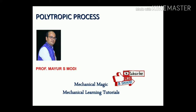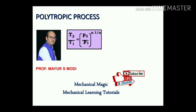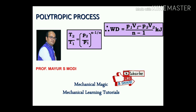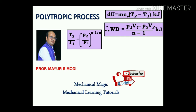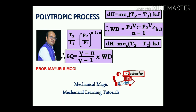Welcome to my YouTube channel Mechanical Magic — mechanical learning tutorials. Today we have a topic on the polytropic process, in which we will derive a relation between temperature, pressure, and index n, and find the work done, internal energy, change in enthalpy, and heat supply during this process. There are many relations to be derived for the polytropic process that will help in identifying work done and internal energy stored by the system.